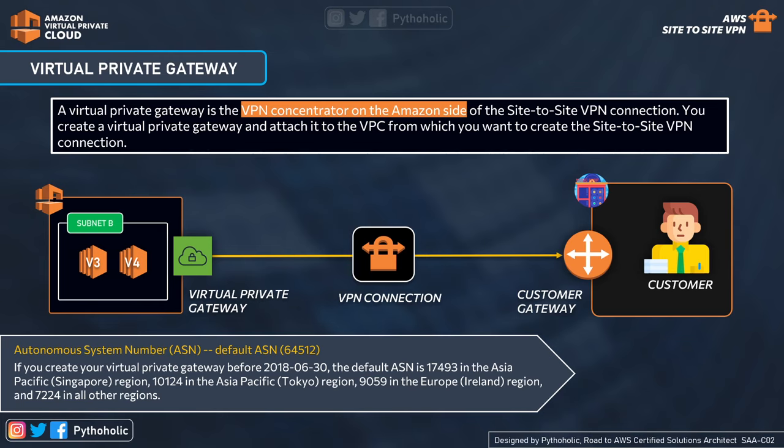To summarize the difference: with a virtual private gateway, you must attach a separate VPN connection to each VPC you want to connect. With a transit gateway, you create a hub that enables inter-VPC communication, so the VPCs don't need separate VPN connections. Now that you understand how things work theoretically, let's see how they are done using the AWS console.